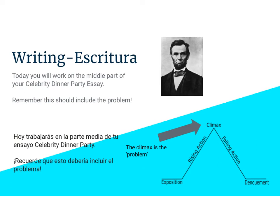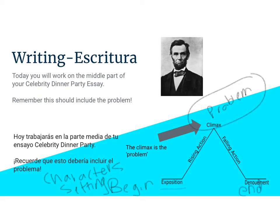For writing today, you're going to continue to work on that middle part of your celebrity dinner party essay. Remember, this should include the problem. I've put this plot diagram on here that we talked about yesterday. Where it says exposition, we use the word beginning — and in our beginning we should have characters and the setting. Up here in the middle, the climax, is where we should have a problem. Then down here will be our ending, but we're not quite there yet. Today we're spending a lot of time again on the problem.